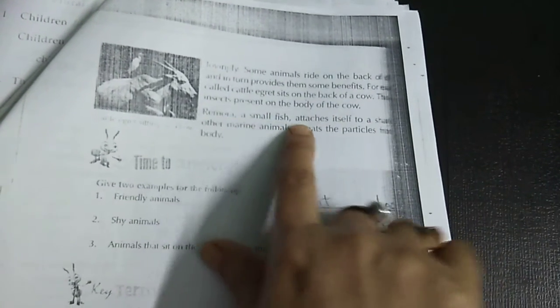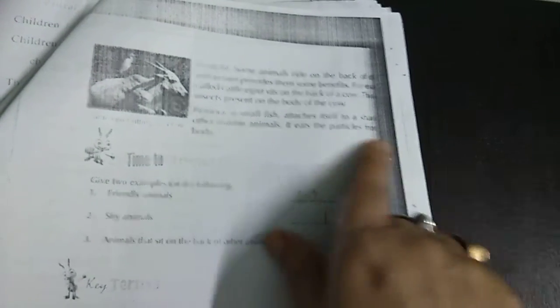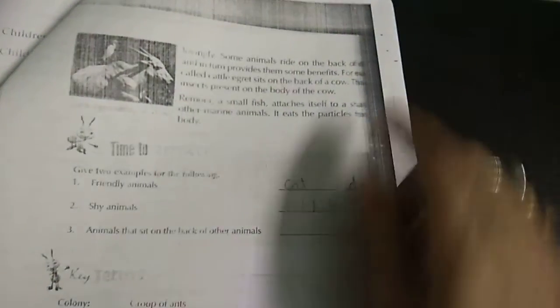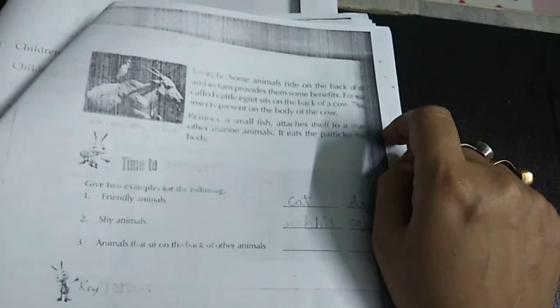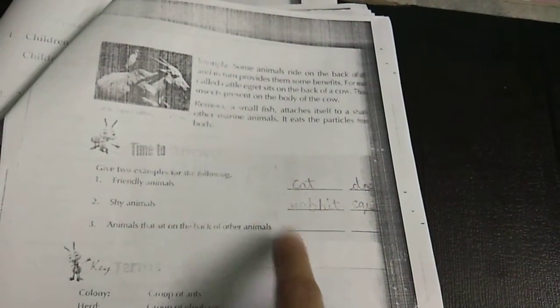Remora, small fish, attaches itself to other marine animal. It eats the particles of other body. This part is missing mine. So, you please see from your book. Friendly animals' name, shy animals and animals that sit on the back of other animals. So, we have finished the chapter.